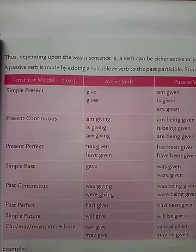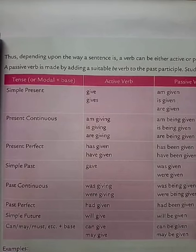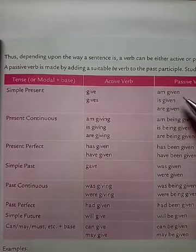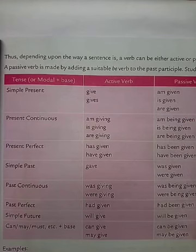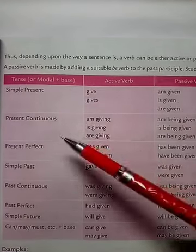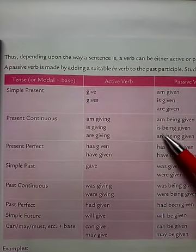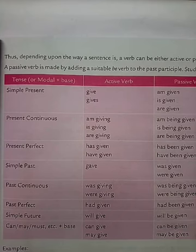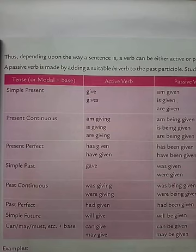Here is a table showing changes in the verb while converting from active to passive voice. If the sentence is in simple present, the passive form uses 'am/is/are given' — that is, 'is/am/are' plus the third form of the verb. In present continuous, it becomes 'am/is/are being given.' In present perfect, it becomes 'has been given' or 'have been given' according to the subject.